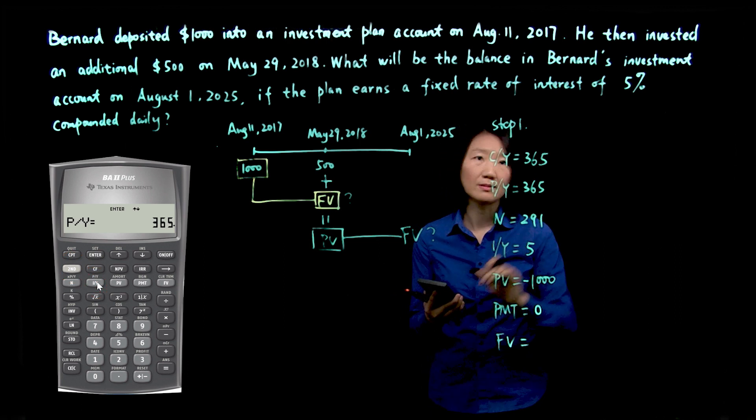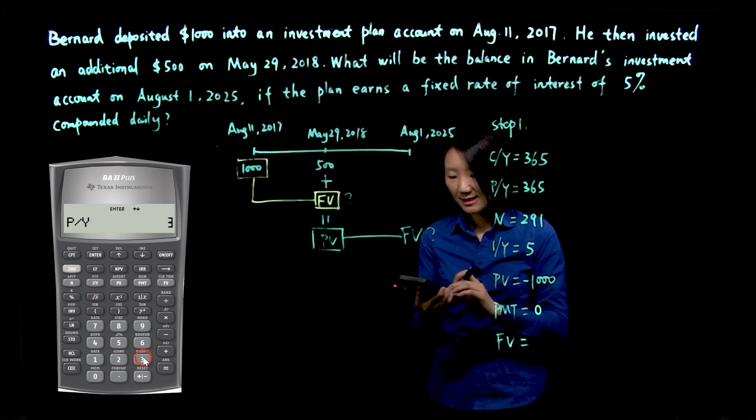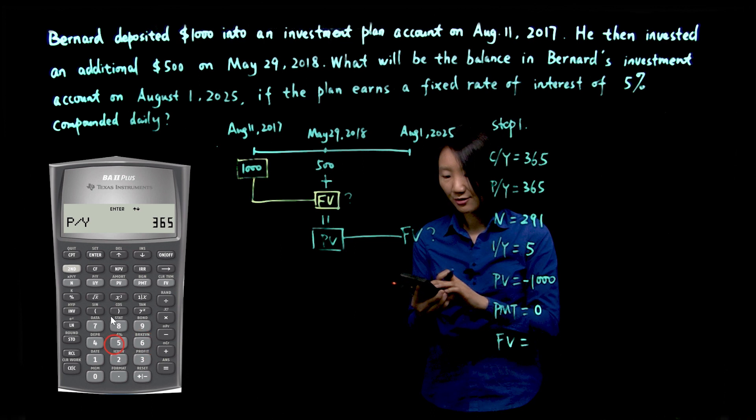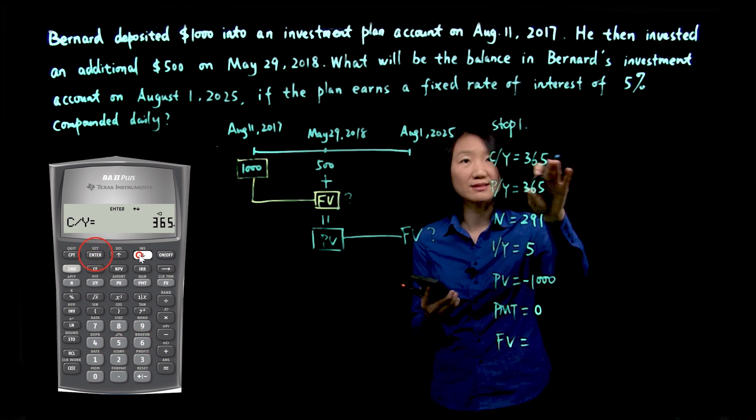Second, PY. So PY is 365. Enter. Scroll down. CY is also 365.